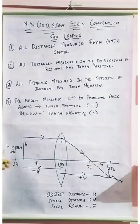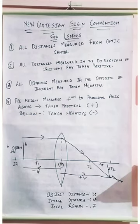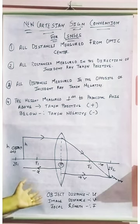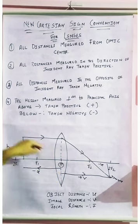When the image is formed on the same side it is considered positive, and when it is below it is considered negative. So this is the sign convention for lenses — all distances are measured from the optic center.